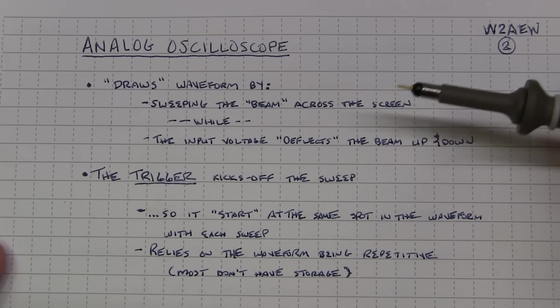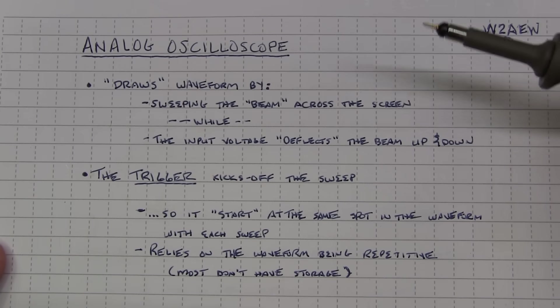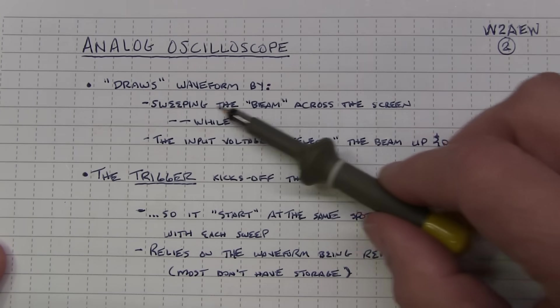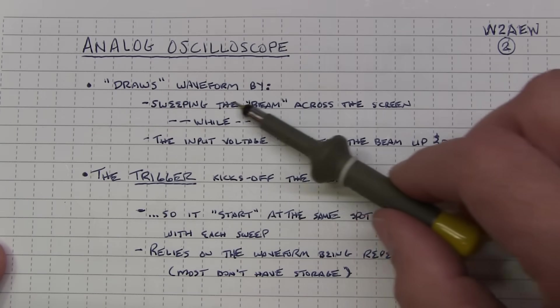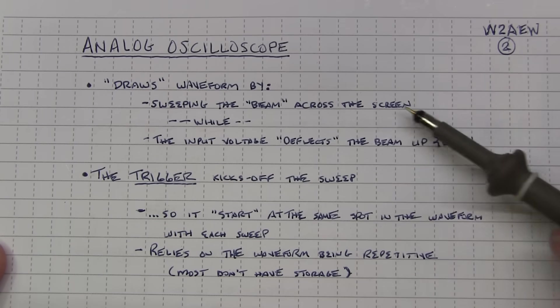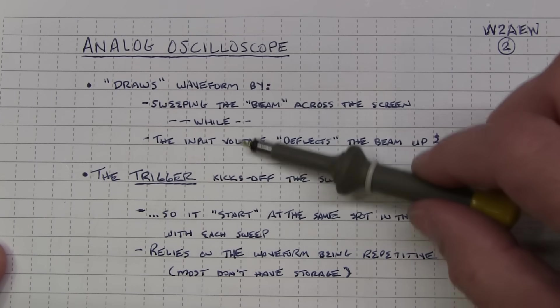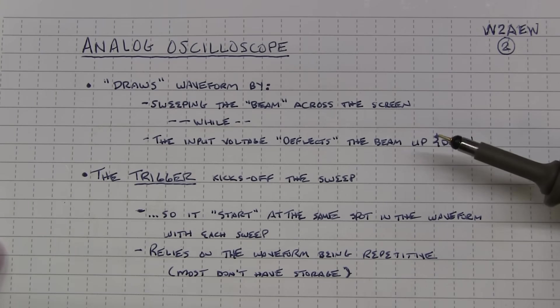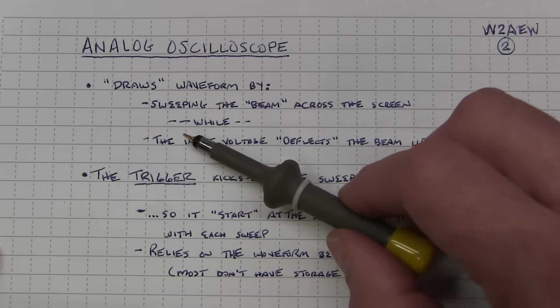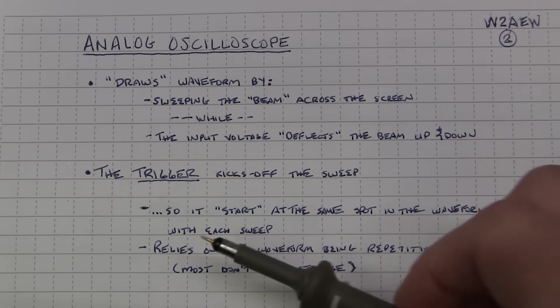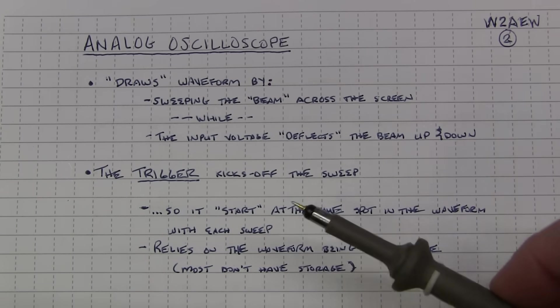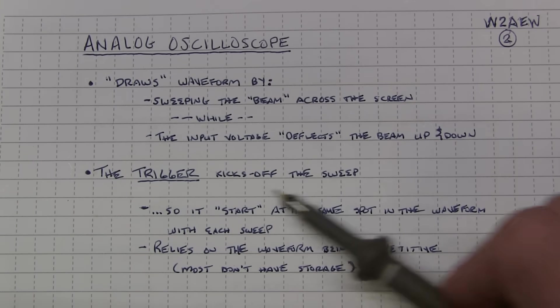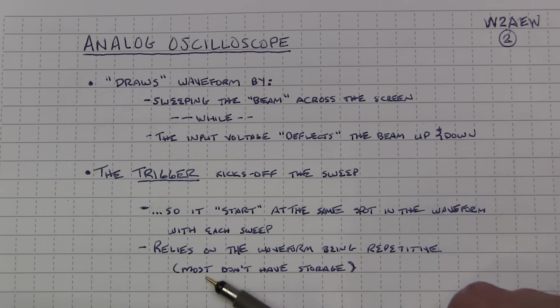I mentioned that the operation of the trigger circuit behaves very differently in analog and digital scopes because the scopes themselves acquire and display signals very differently. An analog scope effectively draws a waveform on the screen by sweeping an electron beam across the phosphorous screen internally and then that beam is deflected up or down depending on what the input voltage is doing. And the trigger's job is to essentially kick off that sweep. So the idea is that we start that sweep at the same location or the same spot in the waveform with each successive sweep.